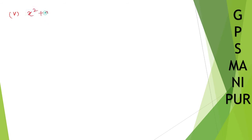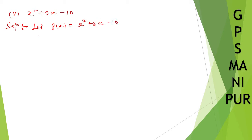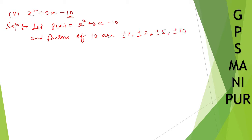Let us do the next question, roman number 5: x squared plus 3x minus 10. Solution: let p(x) equal to x squared plus 3x minus 10. The factors of the constant term 10 are plus or minus 1, plus or minus 2, plus or minus 5, and plus or minus 10. Let us try these.